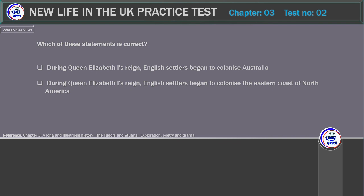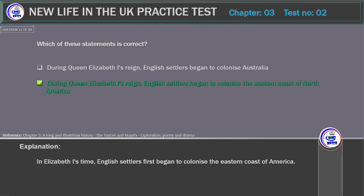Which of these statements is correct? A) During Queen Elizabeth I's reign, English settlers began to colonize Australia. B) During Queen Elizabeth I's reign, English settlers began to colonize the eastern coast of North America. Correct answer: During Queen Elizabeth I's reign, English settlers began to colonize the eastern coast of North America. Explanation: In Elizabeth I's time, English settlers first began to colonize the eastern coast of America.